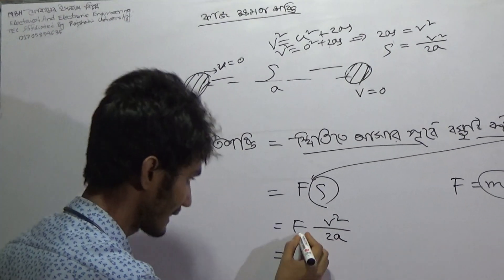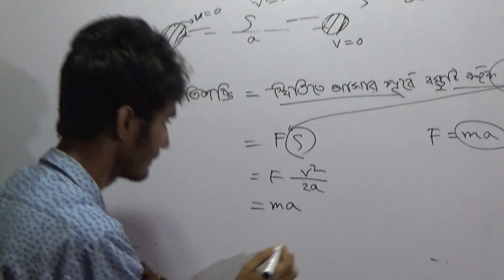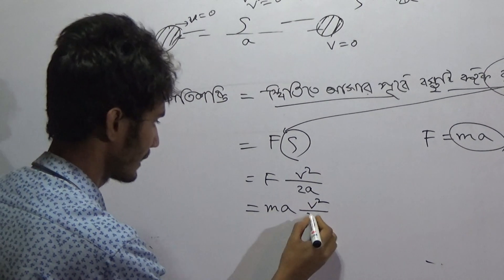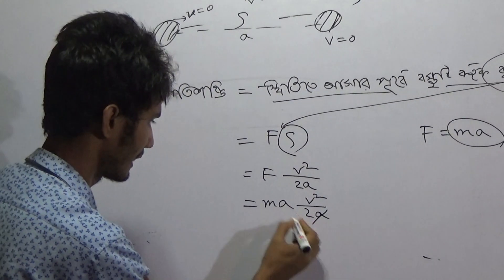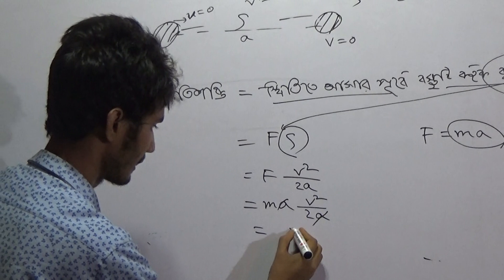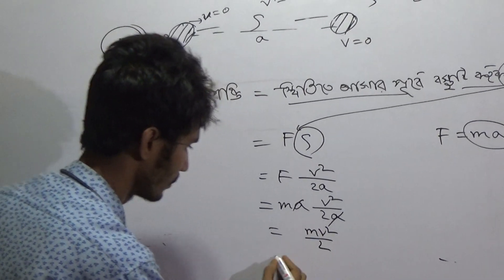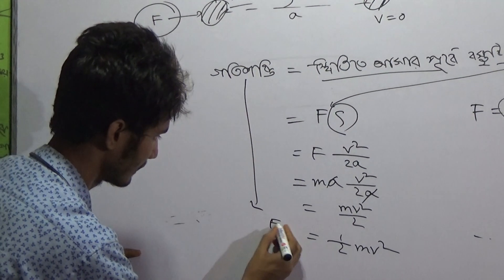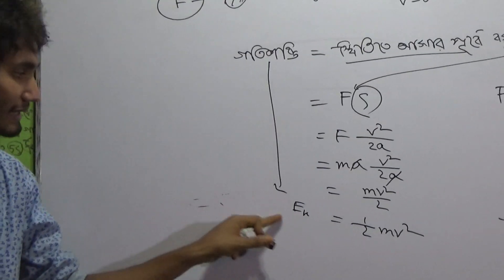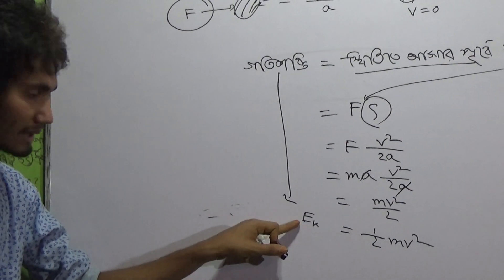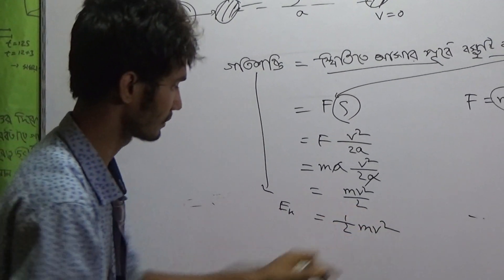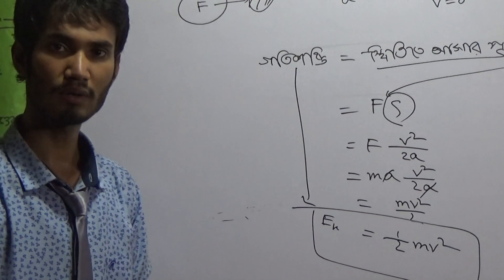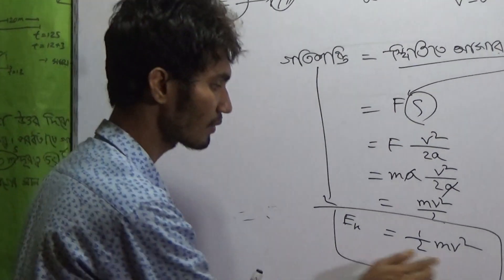So if we get F, M, then we get B squared by 2A. So A, we get M, B squared by 2. We get half M, B squared. And we get E, K — we get kinetic energy. So EK equals half M, B squared. So this is the derivation I would like to do.